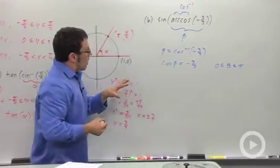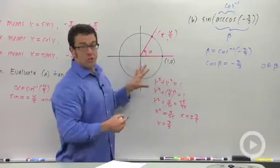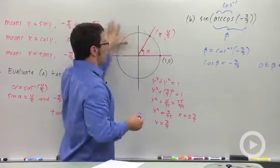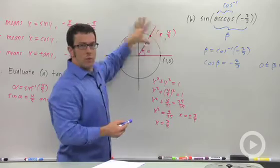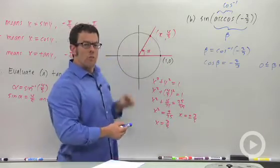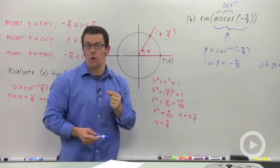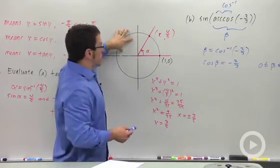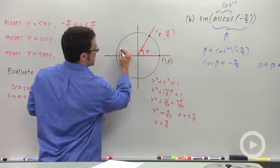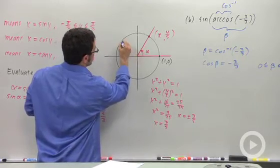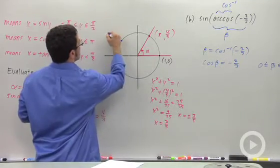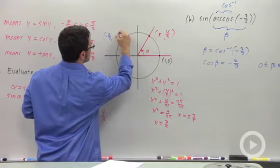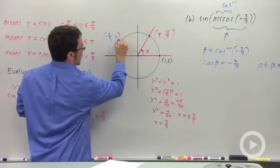So if I draw beta on this unit circle, I've got to draw beta between 0 and pi. Somewhere up here. Now where would the cosine be negative? Remember that cosine comes from the first coordinate of the point on the unit circle. It's going to be somewhere in this quadrant. So let me pick a point where it looks like the x coordinate's negative 2 thirds. How about there? Negative 2 thirds comma something. And this would be my angle.